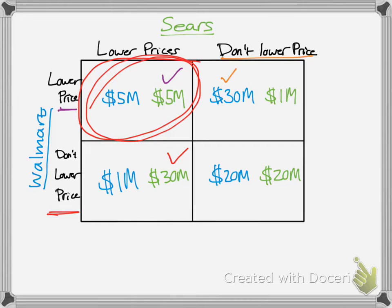The Nash Equilibrium will eventually be at five million dollars for each. I hope that helped with an introduction to game theory. There are a lot of cool applications and examples — thinking problems to work out. You can construct these matrices; there are even 3x2s and larger. For the sake of time I'll call it a day, but feel free to explore online and find a cool problem of your own.